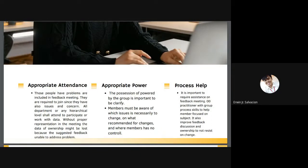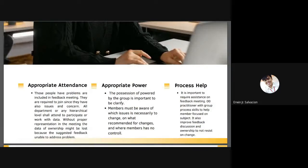Third, appropriate attendance: those people who have problems should be included in the feedback meeting, as they have issues and concerns. All departments and any hierarchical levels shall attend to participate and work with data; without proper representation, the data ownership might be lost. Fourth, appropriate power: the positions of power within the group must be clarified; members must be aware of which issues are necessary to change, what is recommended for change, and where members have no control. Fifth, process help: it is important to have assistance in feedback meetings from practitioners with group process skills who can help members focus on the subjects, improving feedback discussion and ownership.